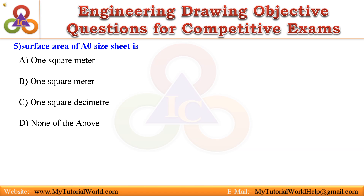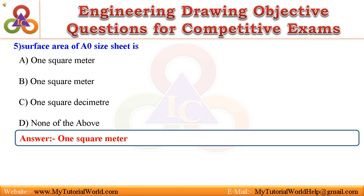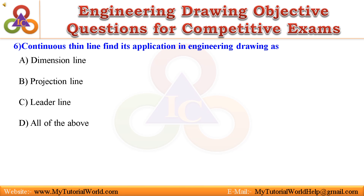Question 5. Surface area of a zero size sheet is: A. 1 square meter. Question 6. Lines in engineering drawing include dimension line, projection line, and leader line. Answer is All of the above.